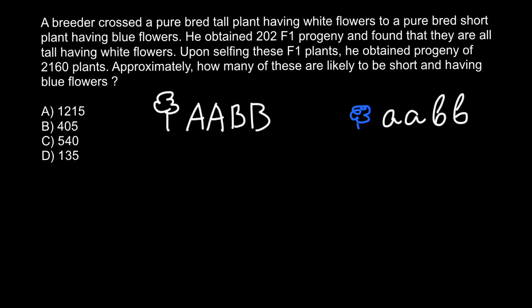How do I know that these traits are recessive and the others are dominant? Because we know that when we cross these two plants, in the F1 generation — where these are the parental plants — all plants are tall and have white flowers. So we can say that tall and white flowers are dominant over short and blue flowers.